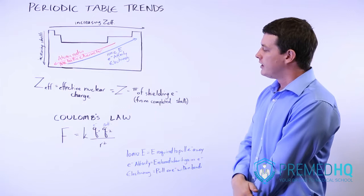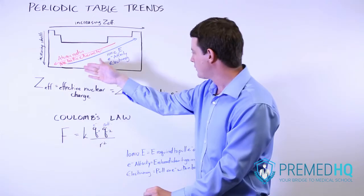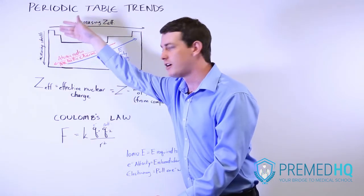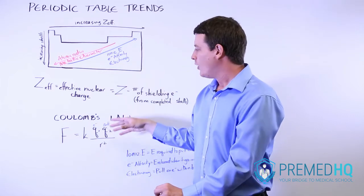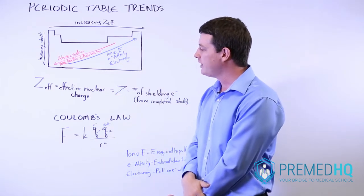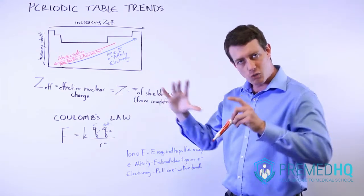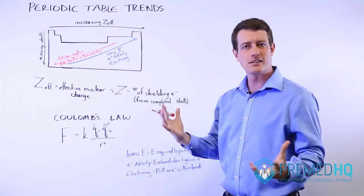And so you'll find that as the force gets smaller, which is what happens when Z effective gets smaller and when the number of shells gets greater and thus the radius gets greater, when those things are happening, then you'll find that the outer layer electrons aren't being pulled as much toward the center. And that has the effect of increasing the radius of your atom.